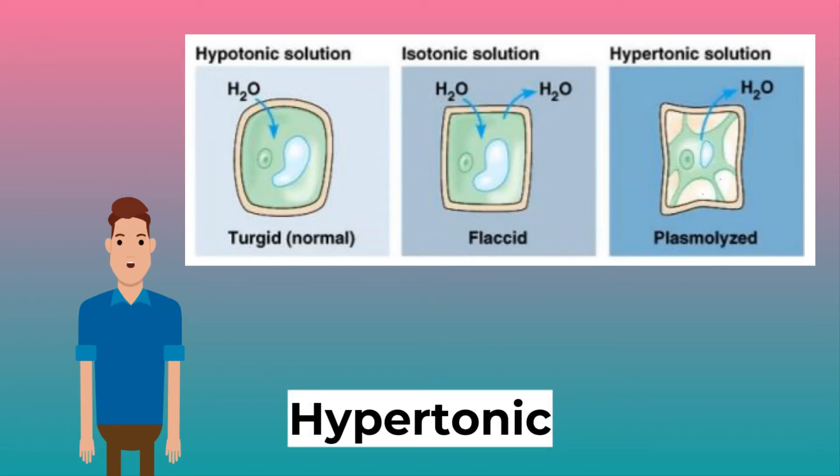Finally, a hypertonic solution. Water will move out of the cell because the water potential is higher in the cell. The cell becomes plasmolyzed, meaning the cell membrane shrivels and detaches from the cell wall.